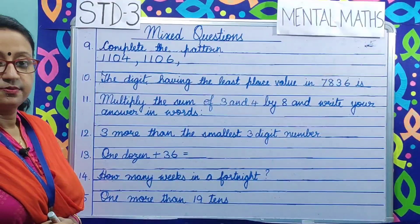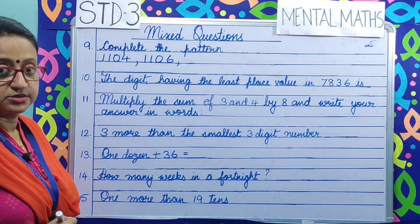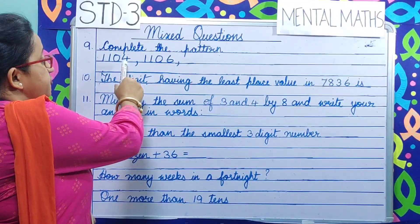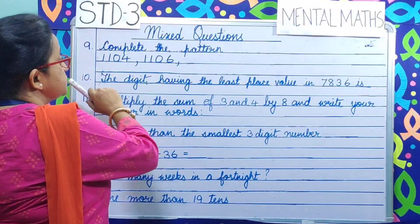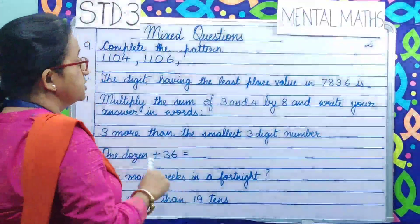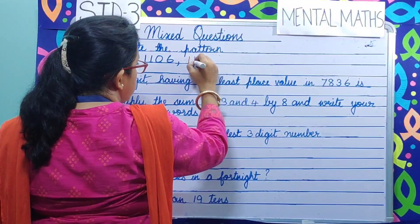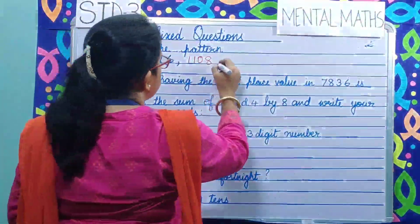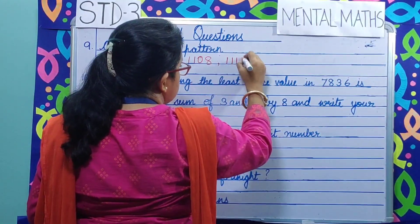Question number 9. Complete the pattern: 1104, 1106. There is one number missing between the two numbers. So 1104, 1105, 1106. We leave one number — 1107 — and write 1108. Again we leave 1109 and write 1110.